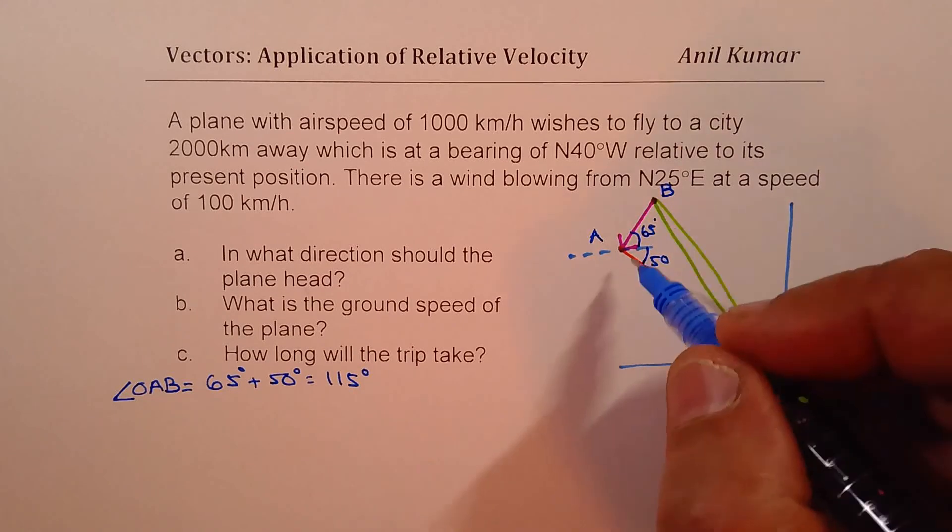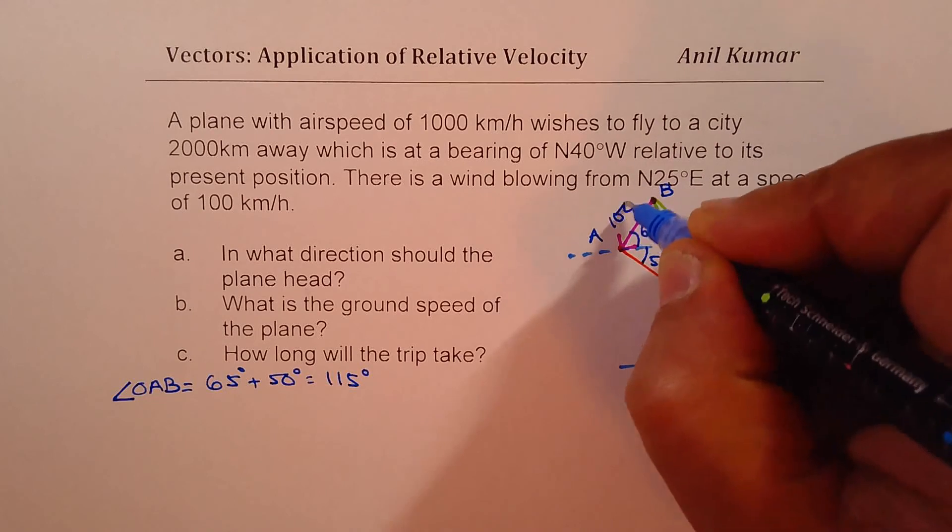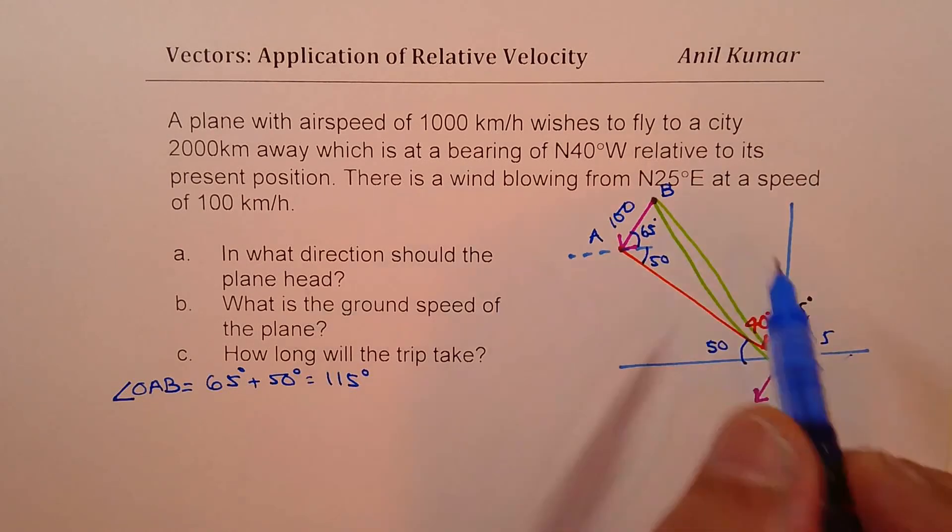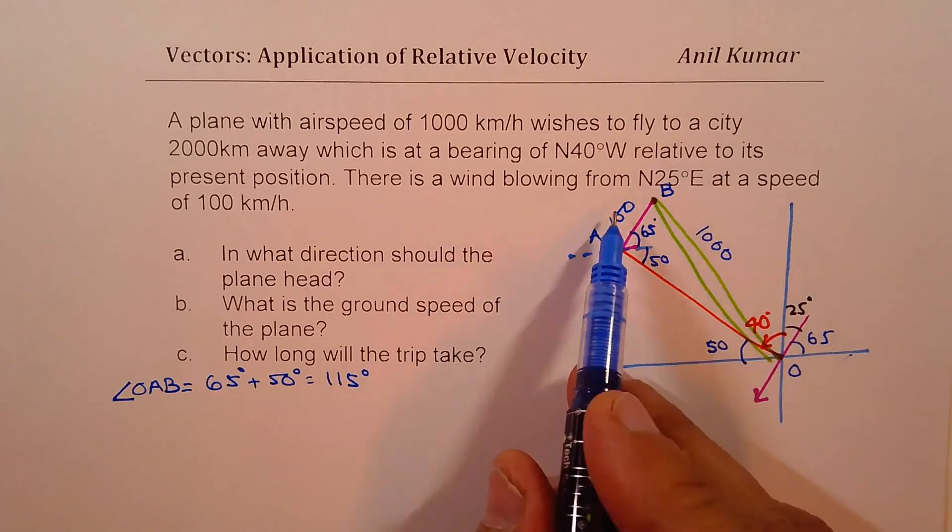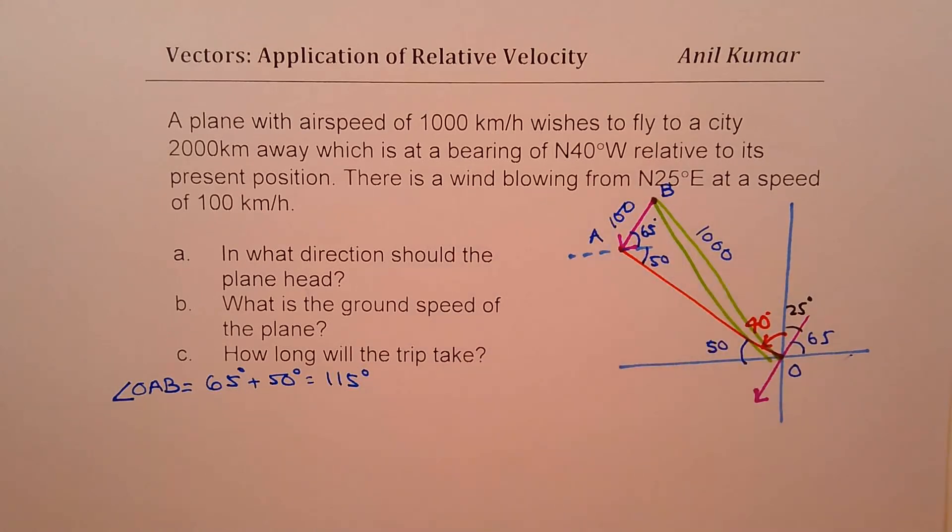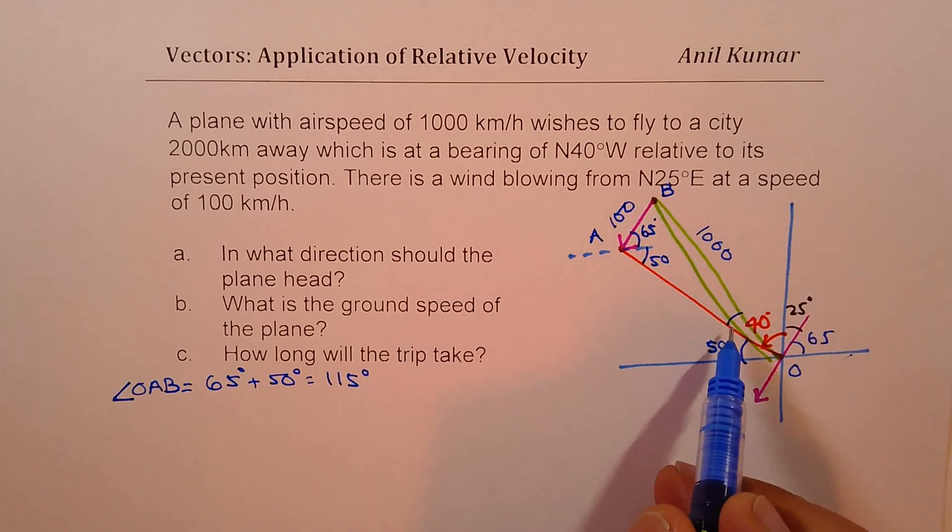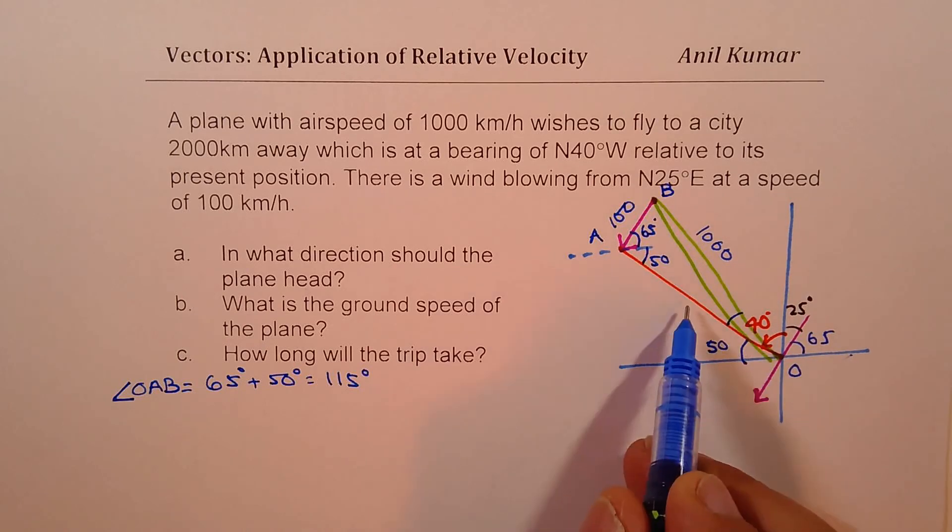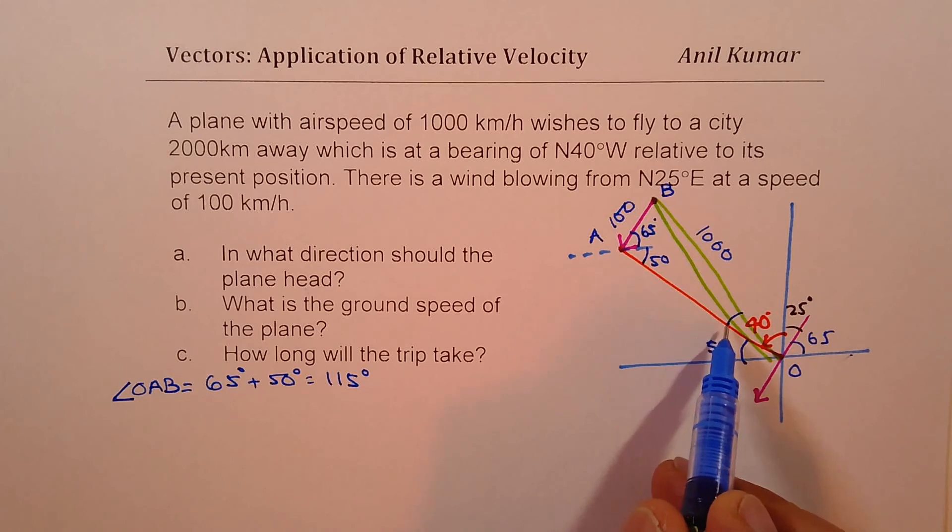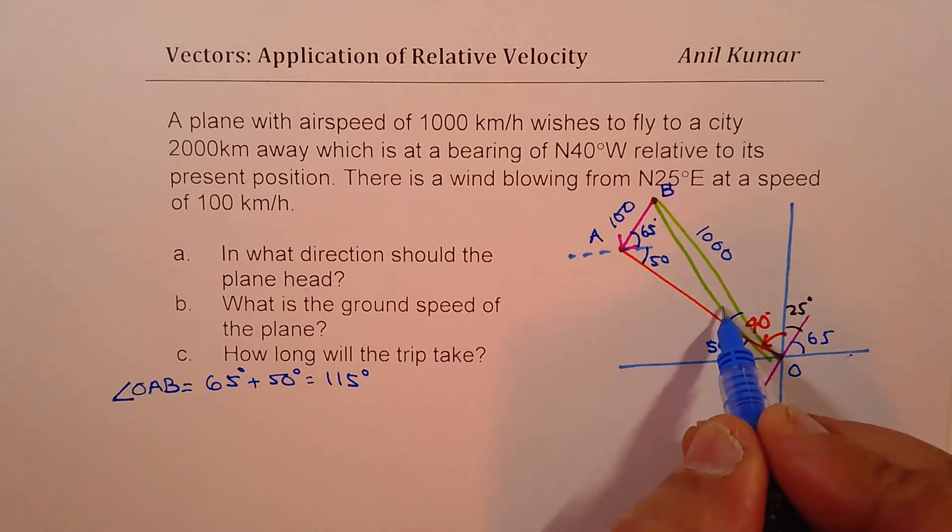We know AB is 100, as far as the velocity is concerned, and the plane velocity is given to us as 1000. So in a triangle, we have a situation where sine law can be applied. Since we have a set of opposite side and the angle, so we can actually solve this triangle using sine law. So let's find the angle which is between the plane heading and final positioning. So this angle, let's call this angle as theta.